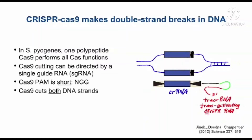The CRISPR-Cas9 system makes double-strand breaks in DNA. In Streptococcus pyogenes, a single polypeptide performs all the Cas functions — it's a single polypeptide with multiple domains instead of multiple proteins. Cas9 cutting can be directed by a single guide RNA, provided you do a little genetic engineering. The Cas9 PAM is short: it's a nucleotide followed by two Gs. And Cas9 cuts both DNA strands.